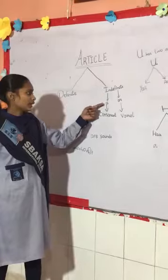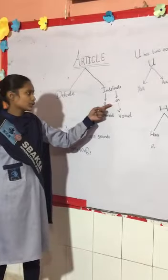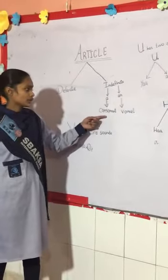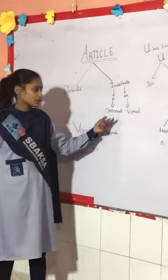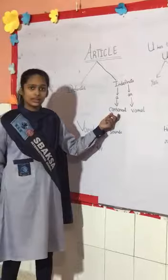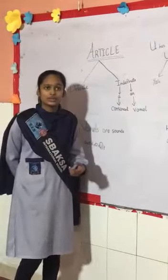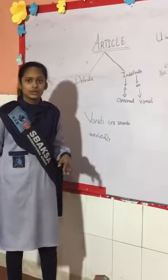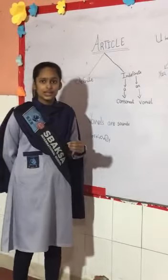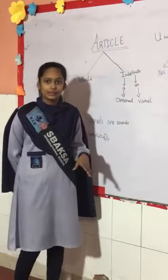Indefinite articles are 'a' and 'an'. We use 'a' for consonants and 'an' for vowels. Now the question is: what are consonants? A consonant is a speech sound that is not a vowel. A consonant is any letter except vowels.